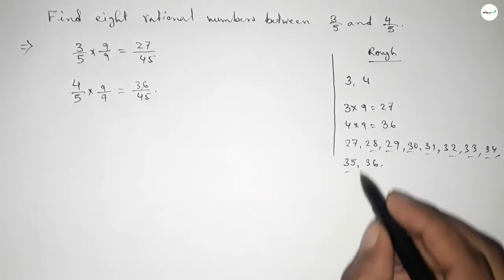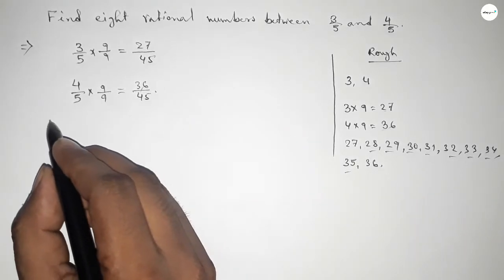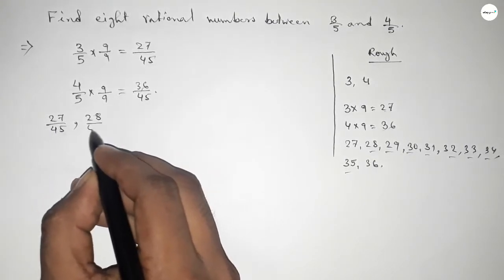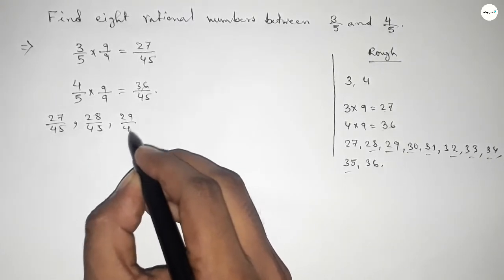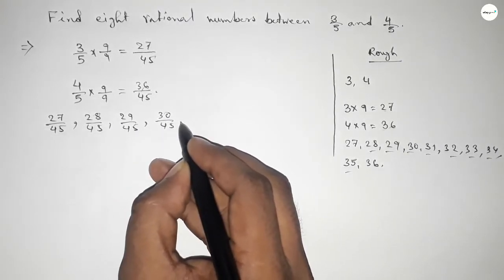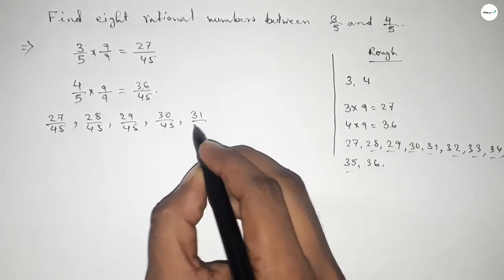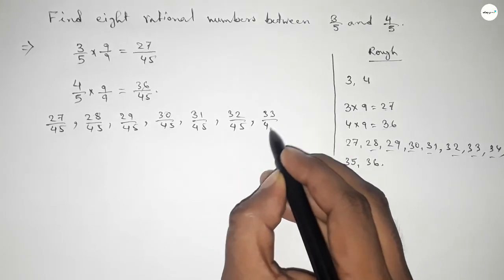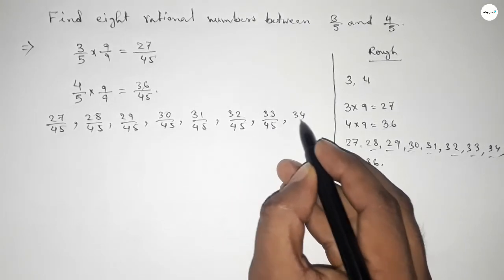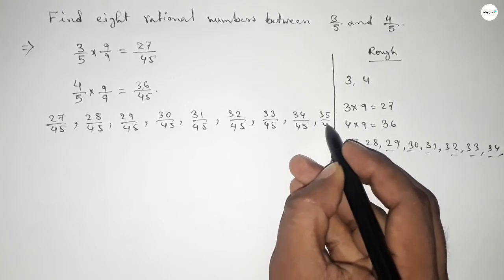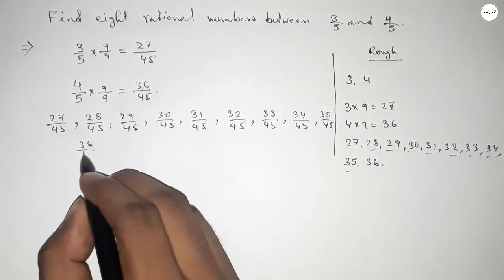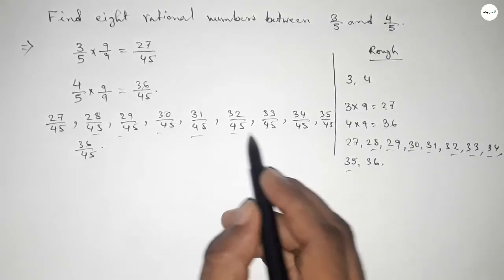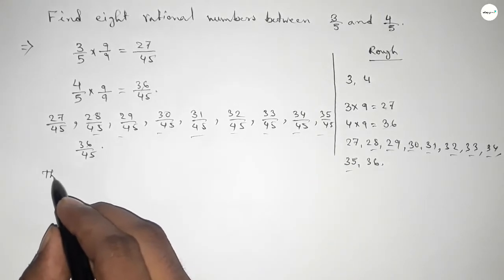We already find out the numbers between 27 to 36. Now here all the rational numbers are: first one 27 over 45, 28 over 45, 29 over 45, 30 over 45, 31 over 45, 32 over 45, 33 over 45, 34 over 45, and last one 36 over 45. Among these, these are the required eight rational numbers.